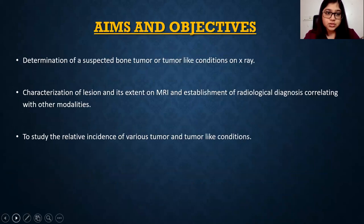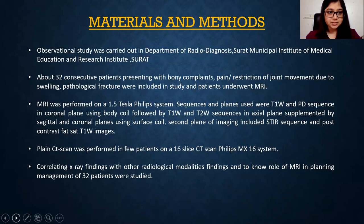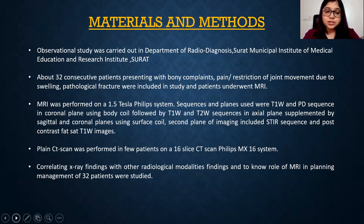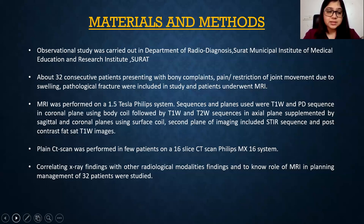Study objectives: determination of a suspected bone tumor or tumor-like conditions on X-ray, characterization of lesion and its extent on MRI, and to study the relative incidence of various tumors and tumor-like conditions. Materials and methods: an observational study was conducted on 32 consecutive patients with bony complaints. MRI was performed using a 1.5 Tesla Phillips machine with sequences T1, T2, PD, and STIR. A few patients also underwent CT, correlating findings with other imaging modalities to understand the role of MRI in planning management.